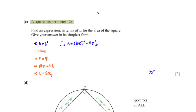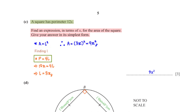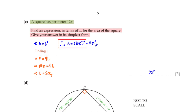A square has perimeter 12x. Find an expression in terms of x for the area of the square in its simplest form. The perimeter of a square is 4L, and we've been given 12x, so dividing both sides by 4 gives L equals 3x. The area is then (3x)² which equals 9x².